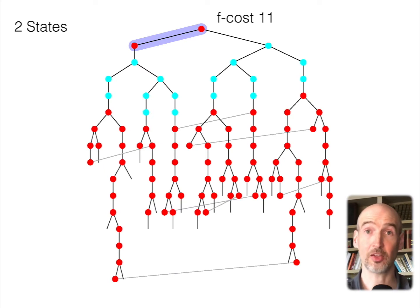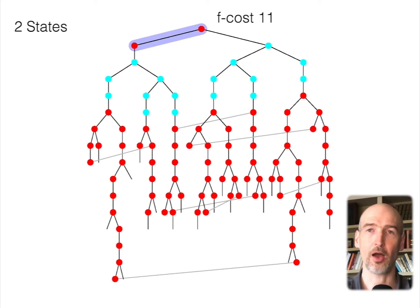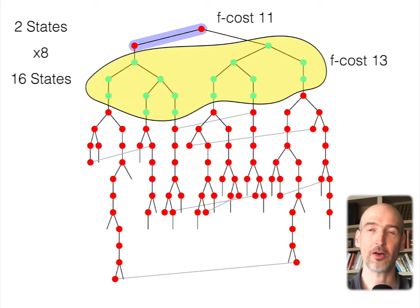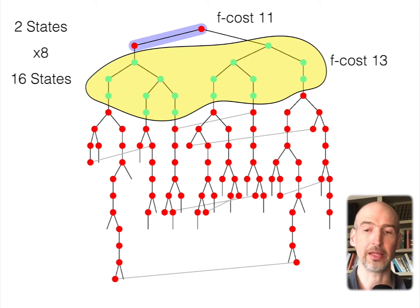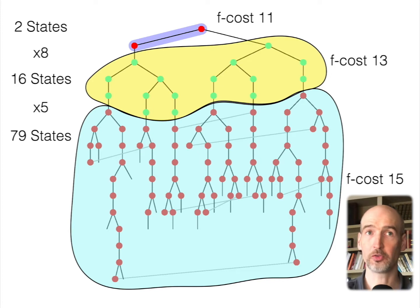IDA* has been a successful algorithm in practice because of a few things. When we look at how many nodes there are for a given F cost — how many states there are in the state space with that particular F cost — we see for F cost 11 that we have two states. When we have F cost 13, that grows to 16 states, a factor of 8. When we go to F cost 15, we get 79 states in the tree, growing by a factor of 5. As long as that grows by a constant factor, we see exponential growth in the tree.